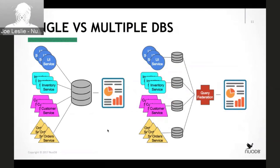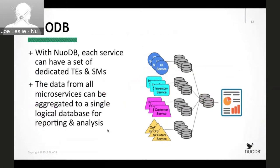Talking through the different deployment models: single versus multiple. Your services can be serviced by a single large database, or they can also be serviced by smaller databases per microservice, where NuoDB services those applications. Then through a query federation model, you can retrieve data across those different applications. If you'd like to roll that data up into a more aggregated view for reporting and analytics, it's quite simple to do that — creating a single larger logical database view. NuoDB provides that flexibility, with dedicated TEs and SMs for individual microservices.